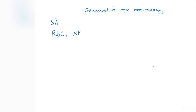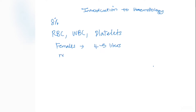Your blood consists of red blood cells, white blood cells, and platelets. The volume of blood differs between males and females: females have four to five liters, while males have approximately five to six liters. Blood is much more viscous or thicker than water and has a near-neutral pH of about 7.45.